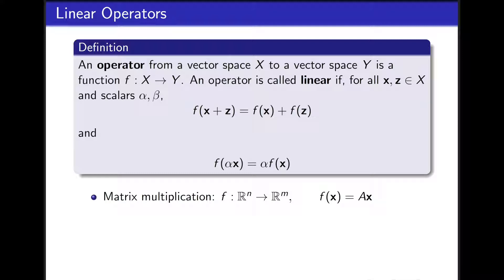Matrix multiplication is a function that operates on a vector from R^n and returns a vector in R^m. This is a perfect example of a vector space operator. And also by the basic properties of matrix multiplication we know that this operator is going to be linear.